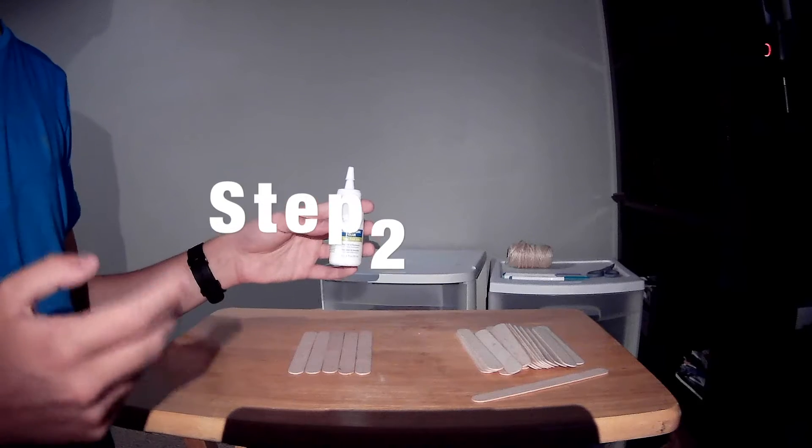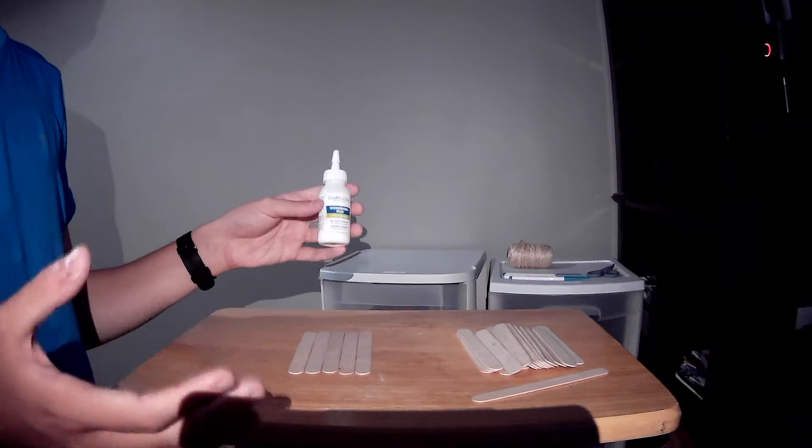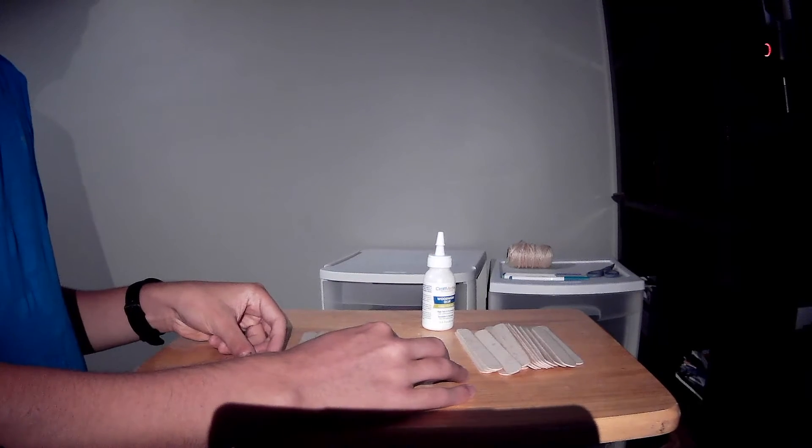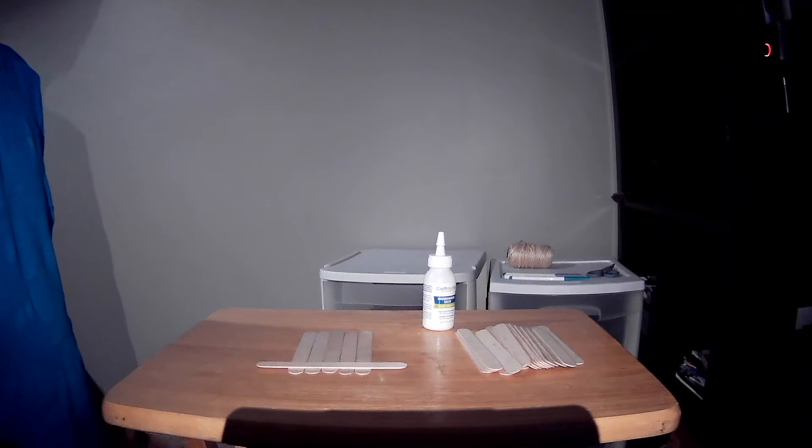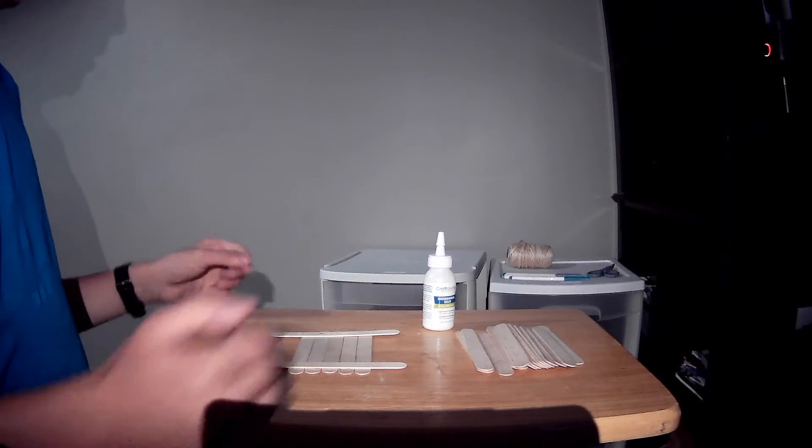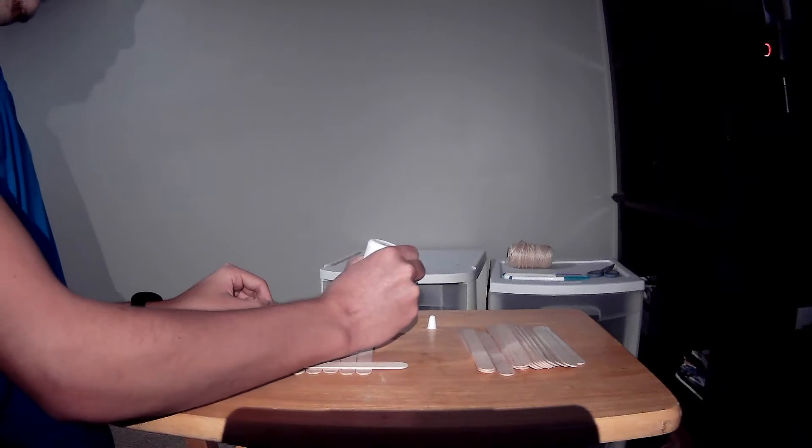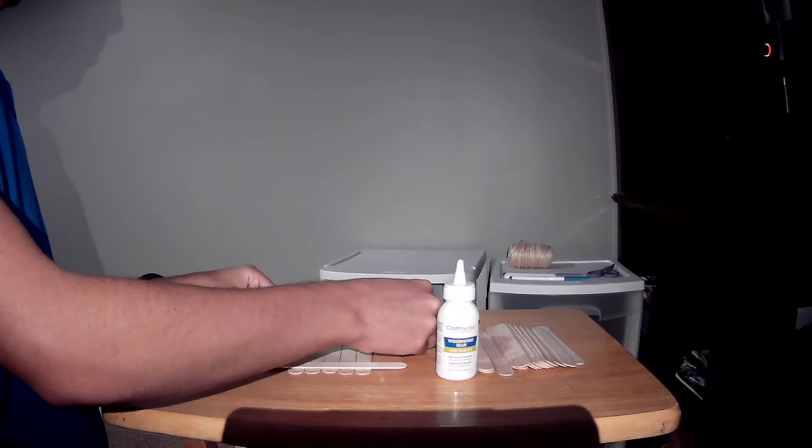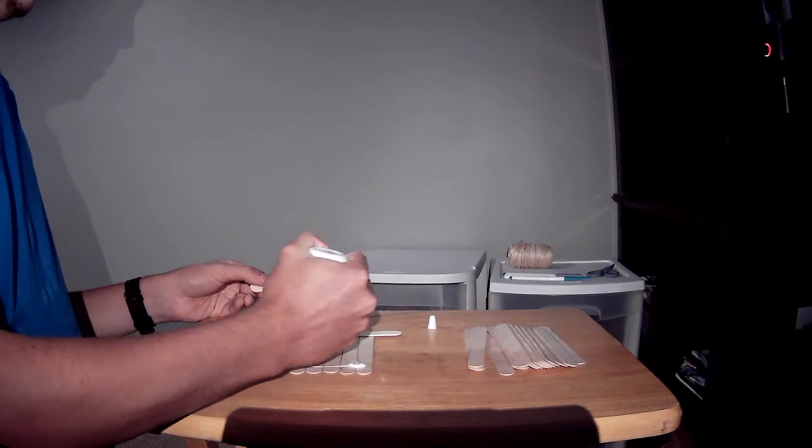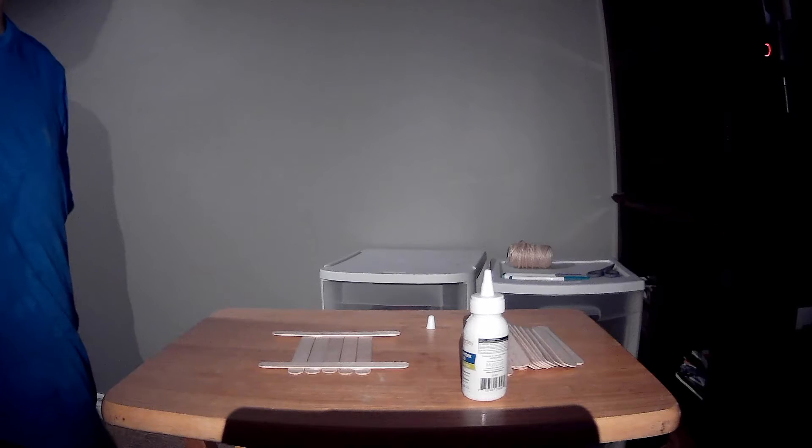Step two, you want to glue two sticks across the six base sticks towards the end of each side. This will be what holds your base together. So, I'll take one stick here, glue it like that. Make sure there's a little bit of gap on the end, about an inch or so. Do it on the other side. Then take your wood glue and just glue it on. Just like that for both sides. Try to make sure to line it up.